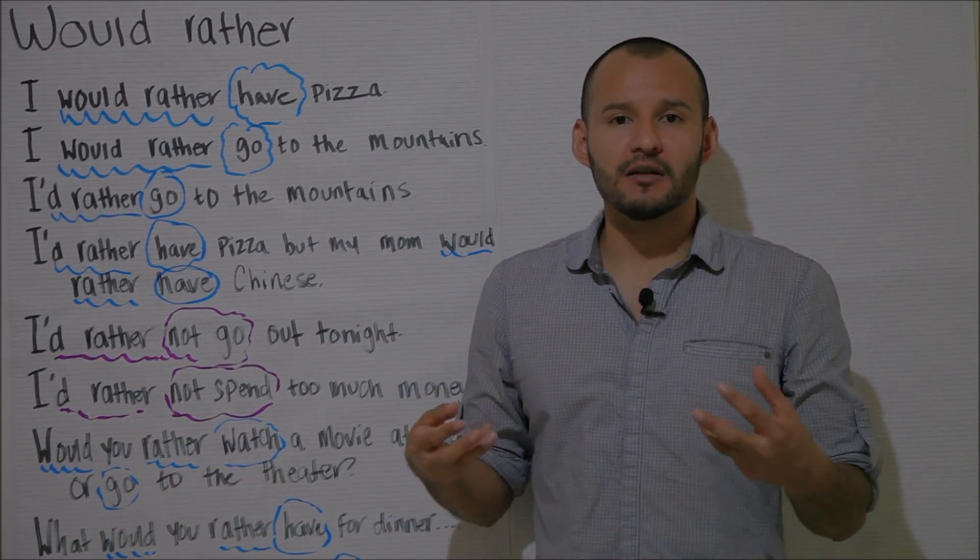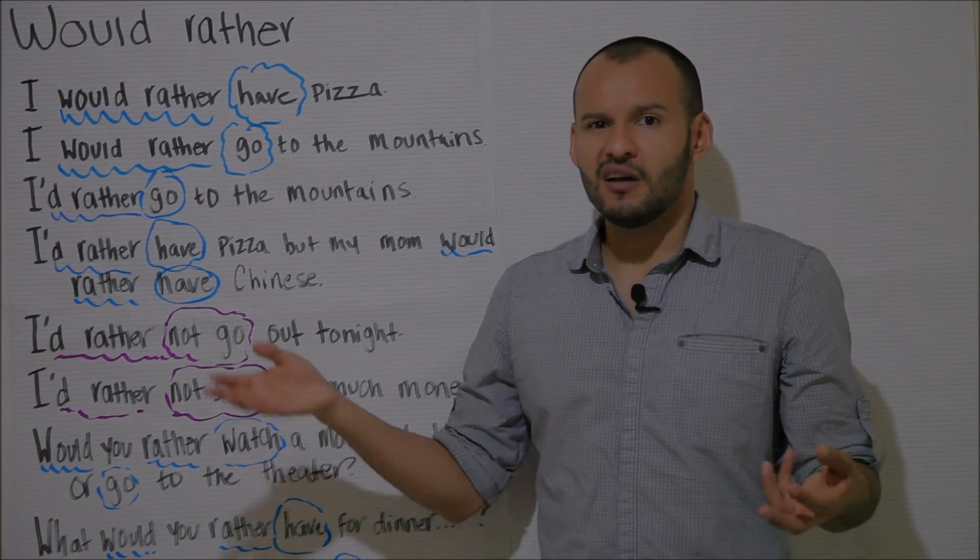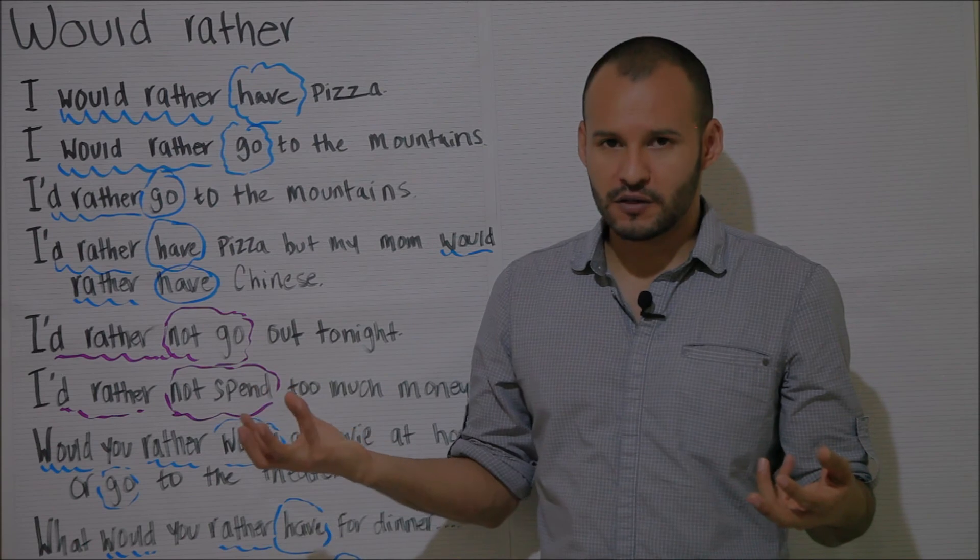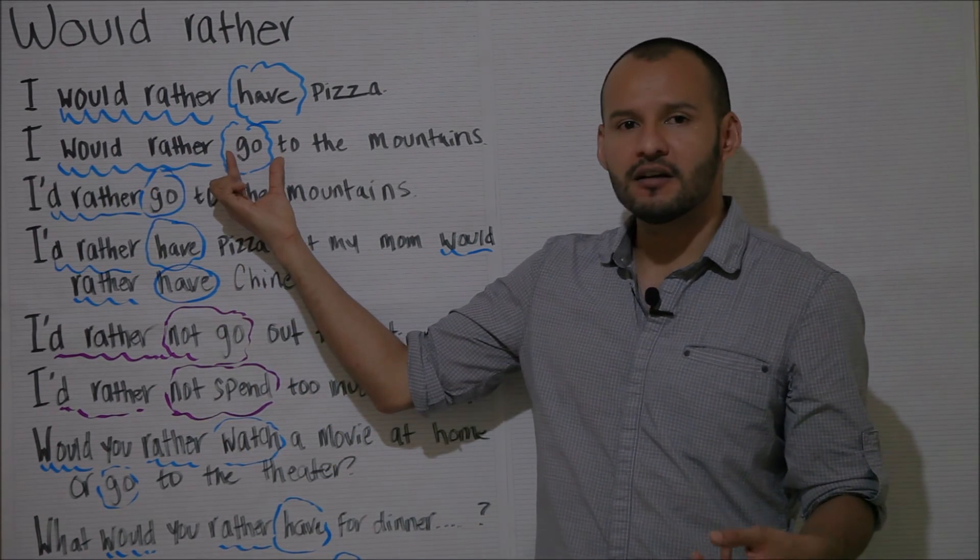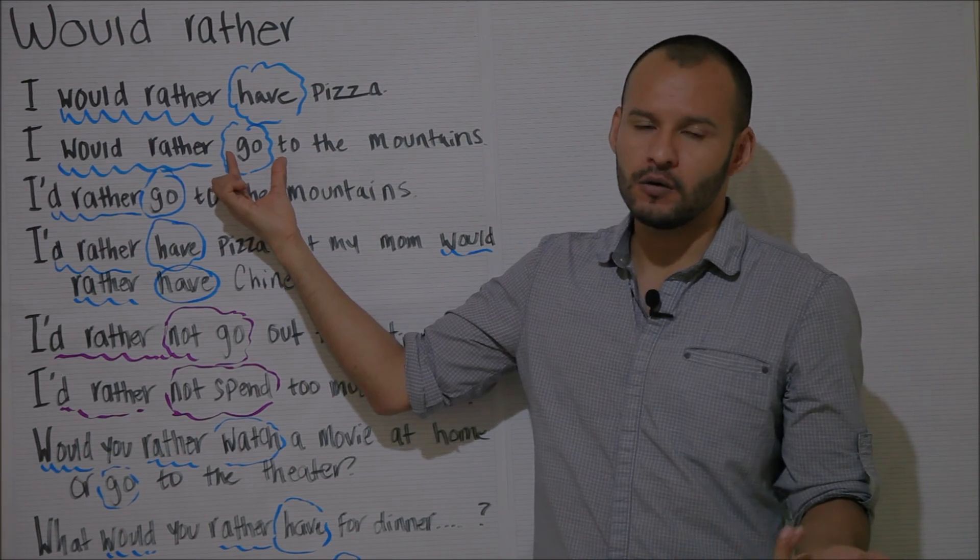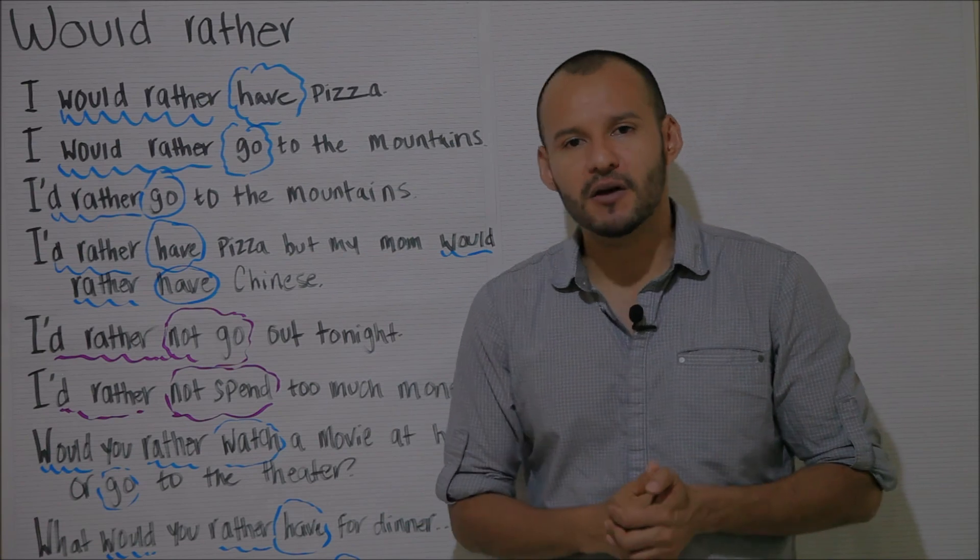Similarly if you ask me if I would rather go to the mountains or the beach for my next vacation, I would rather go to the mountains. So again would rather and a verb in the base form, go, and again this basically means that I prefer to go to the mountains.